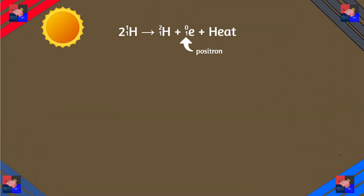Fusion reactions are a whole other type. The energy produced in a fusion reaction rivals the amount of energy produced in a fission reaction. Let's take an example: the sun. The nuclear reactions in the sun start when two hydrogen atoms join together to form an isotope of hydrogen, producing heat energy in the process.